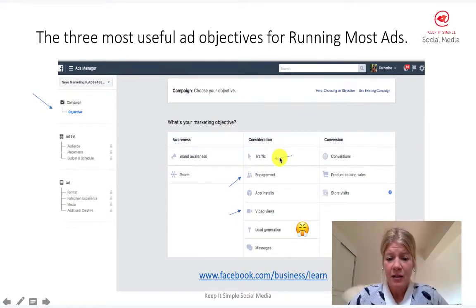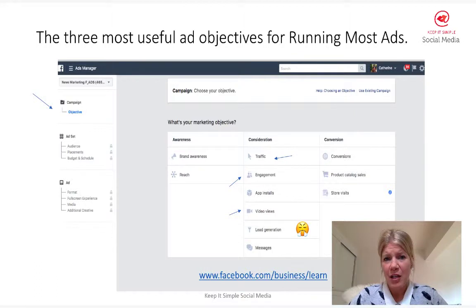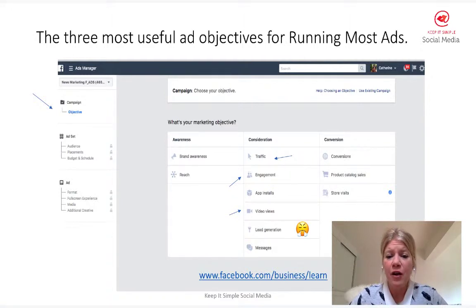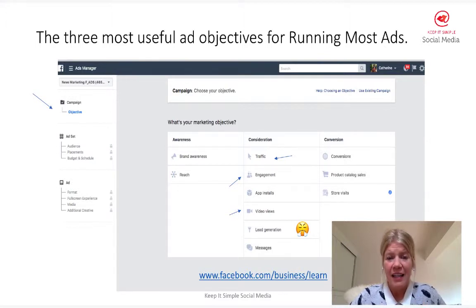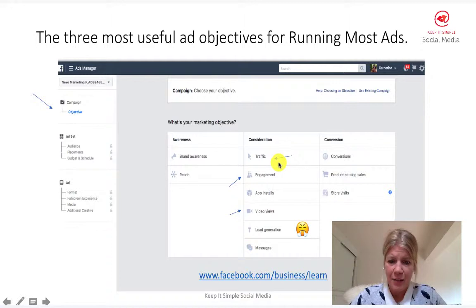The first is 'Traffic' — traffic to your website or to a link. If you have a post with an active link in it, you would use traffic as your objective. Engagement is by far the most popular. If you are on your business page, you'll see big blue boost buttons all the time. The boost button is pretty much the same as your engagement objective, except it's kind of fast-food advertising. By using Ads Manager and the actual engagement marketing objective in the backend, you get way better targeting options.